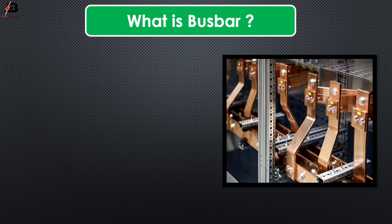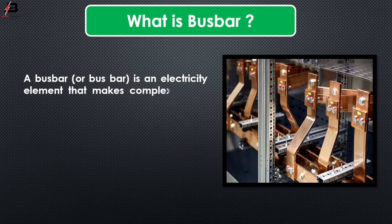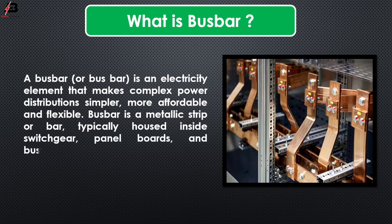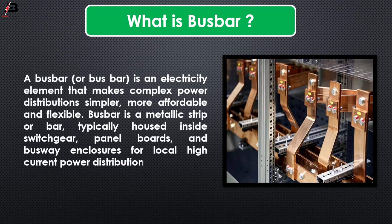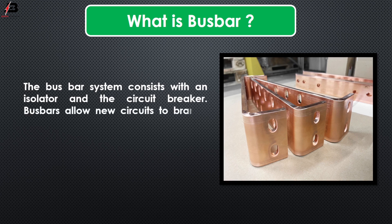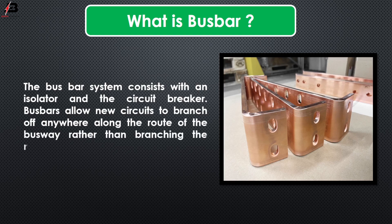What is a busbar? A busbar is an electricity element that makes complex power distribution simpler, more affordable, and flexible. Busbar is a metallic strip, typically housed inside switchgear, panel board, and busway enclosure for local high current power distribution. The busbar system consists of an isolator and a circuit breaker. Busbar allows new circuits to branch off anywhere along the route of the busway rather than branching the main supply at one location.